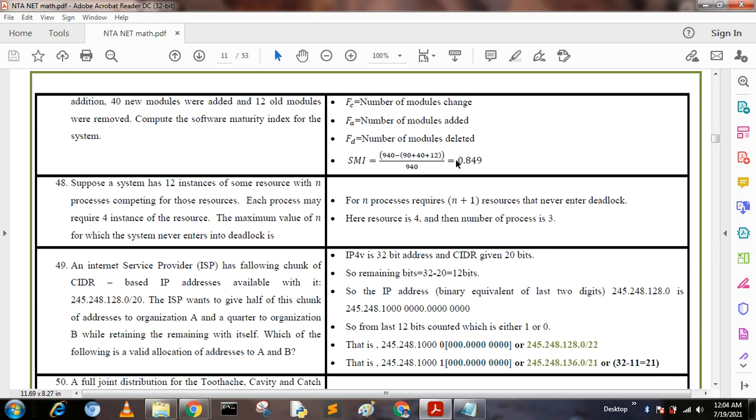Next question: Suppose a system has 12 instances of a resource with n processes competing for those resources. Each process may require 4 instances of the resource. The maximum number of n for which the system never enters into deadlock is: For n processes requiring r resources to never enter deadlock, the number of processes should be 3.